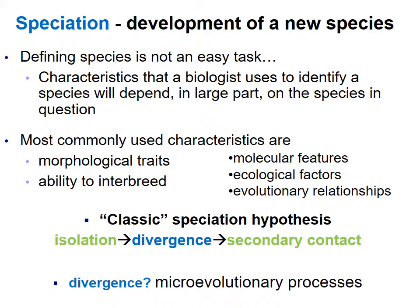Speciation is the development of a new species — that's a test question that frequently gets missed. However, saying what a species is is a lot more complicated. Defining a species is tricky. Biologists typically use morphological characteristics, whether organisms can interbreed, molecular features like similarities between DNA, RNA, and proteins, ecological factors like where they live, and evolutionary history.